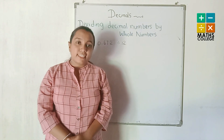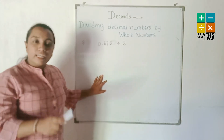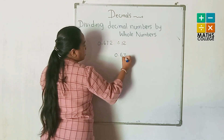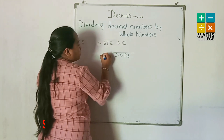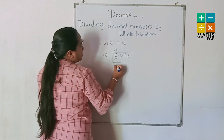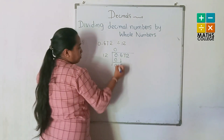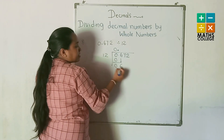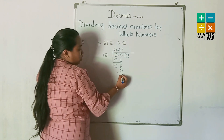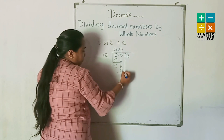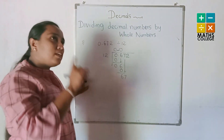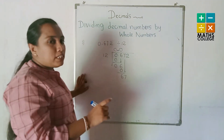Now the third example: 0.672 divided by 12, using the long division method. Consider 0 — no 12s, write 0. Consider 6 — no 12s. Consider 67: how many 12s? Let's count: 12, 24, 36, 48, 60 — five 12s. 5 multiplied by 12 is 60.